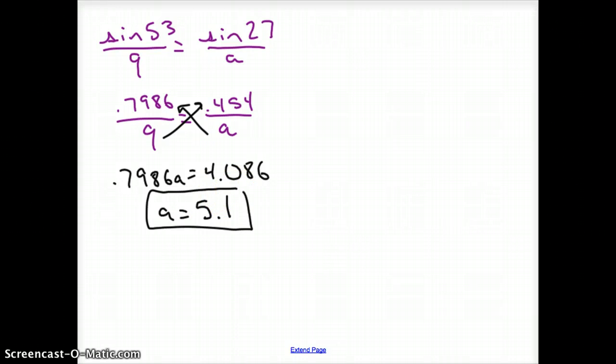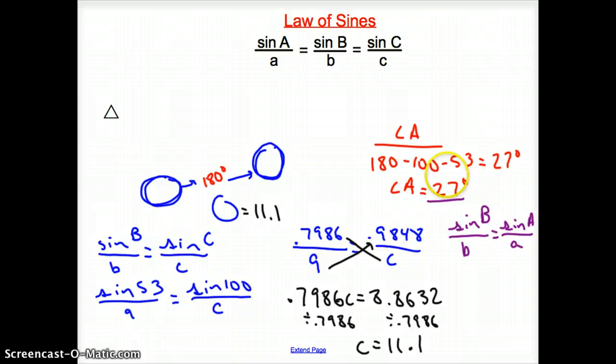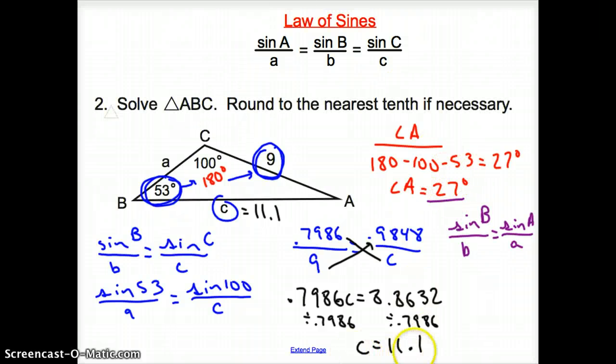And, we came up with our three missing lengths and angles. So, a is 5.1. Our angle is 27. And, our C is 11.1. And, that does it for section 12.4 law of sines. Good day.